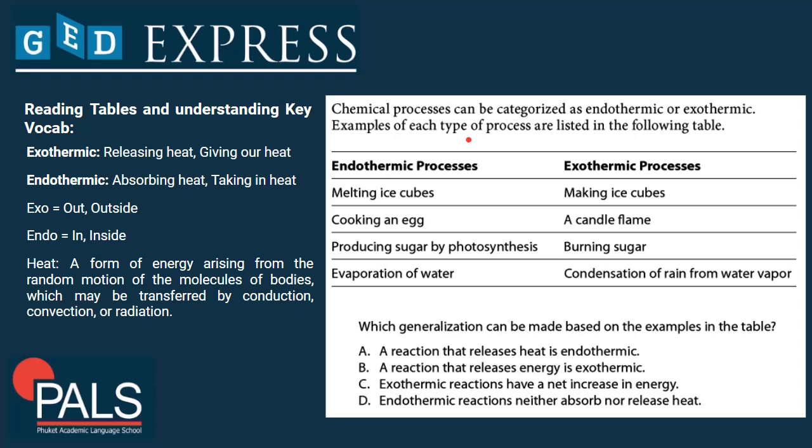Endothermic processes: melting ice cubes, cooking an egg, producing sugar by photosynthesis, evaporation of water. Exothermic processes: making ice cubes, a candle flame, burning sugar, condensation of rain from water vapor.